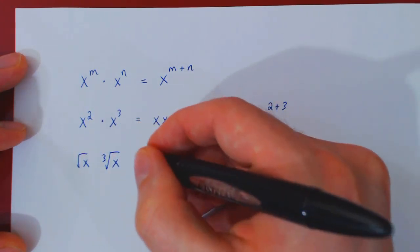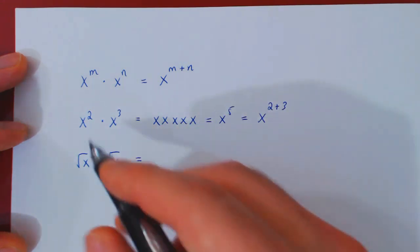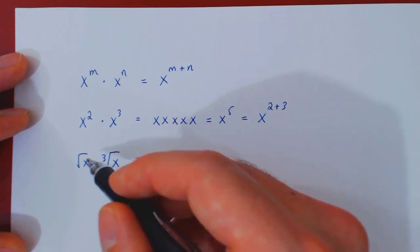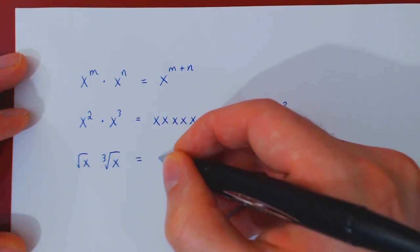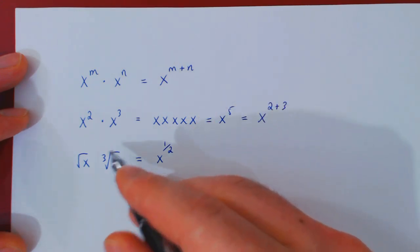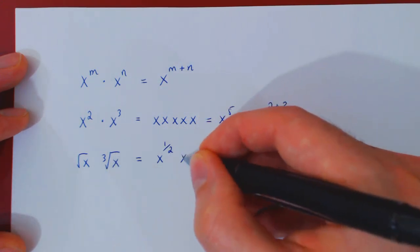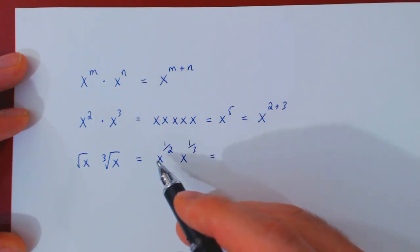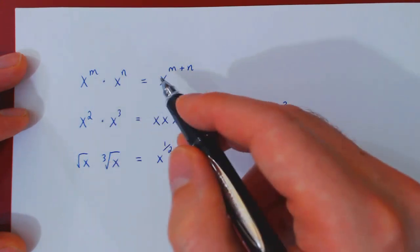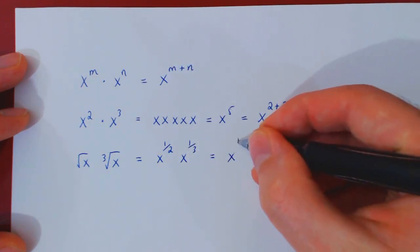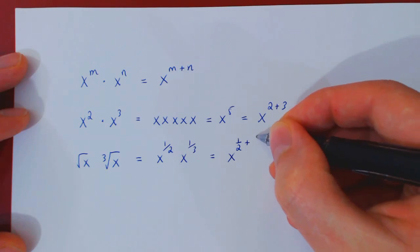Well, the first step, and again, assuming we want to regroup as a single power of x, the first step is to replace each root by an exponent. So the square root is an exponent of 1 half. The cube root is an exponent of 1 third. So now we are multiplying two powers of x. We can regroup by adding up the exponents. This will be x to the 1 half plus 1 third.